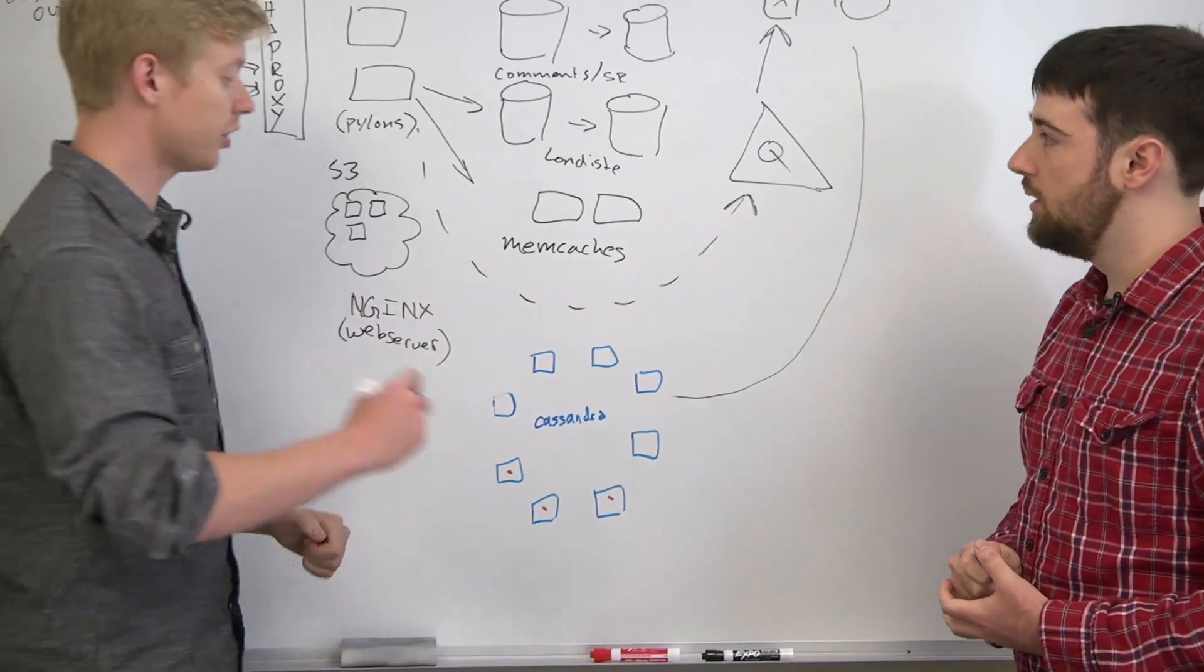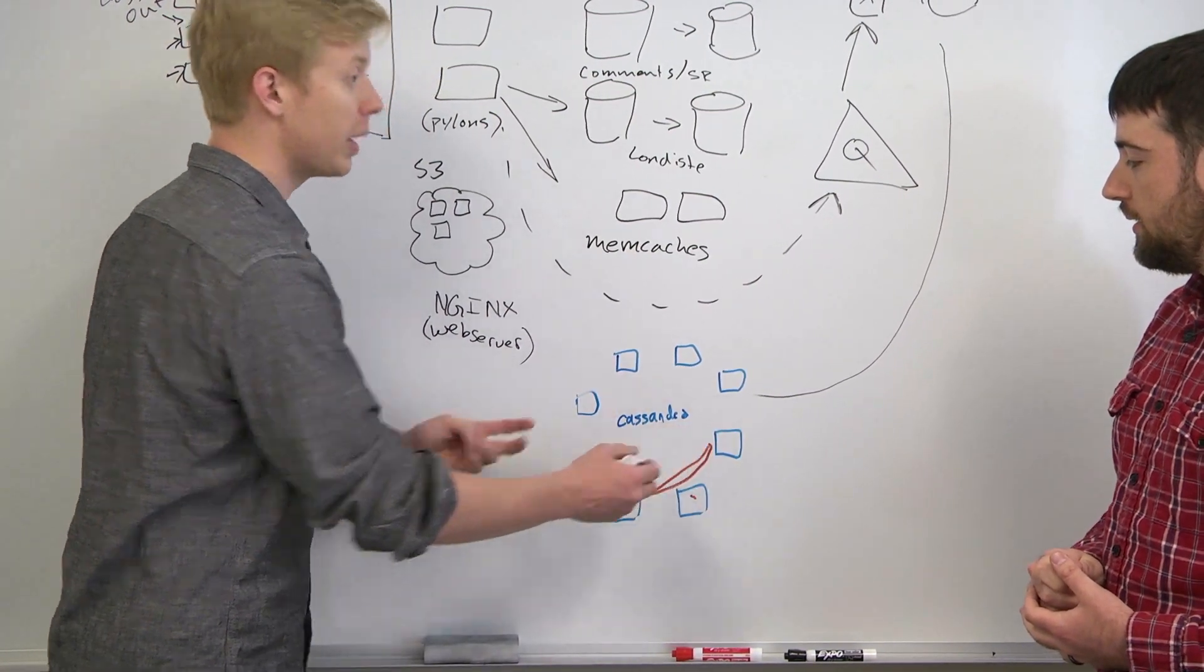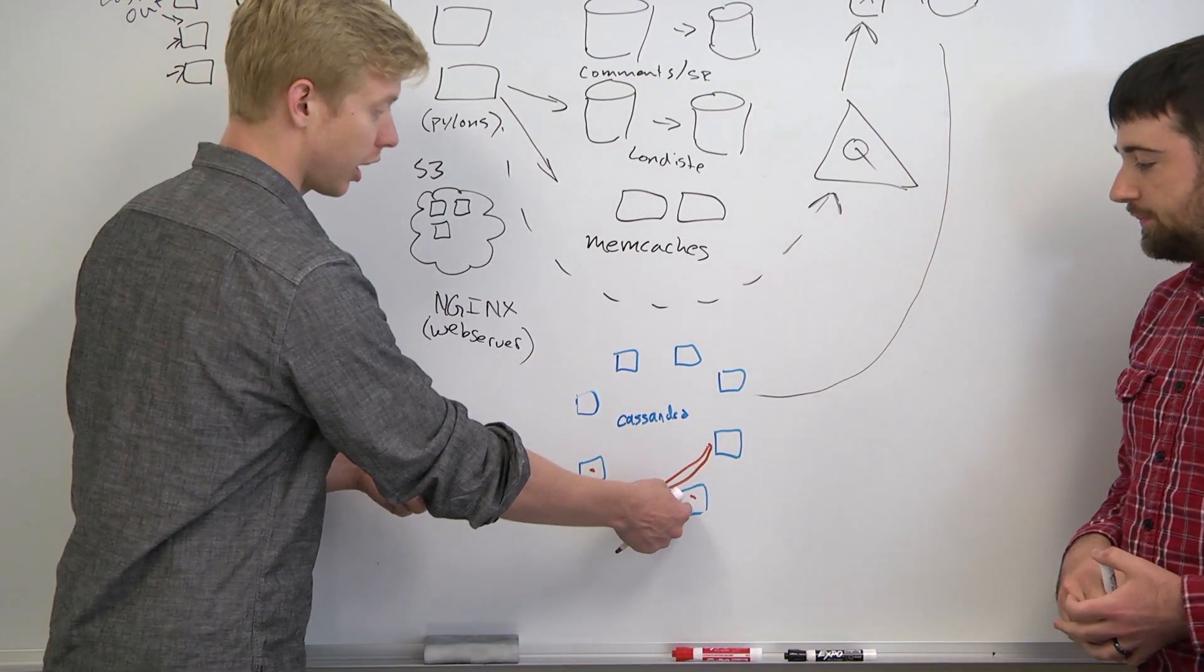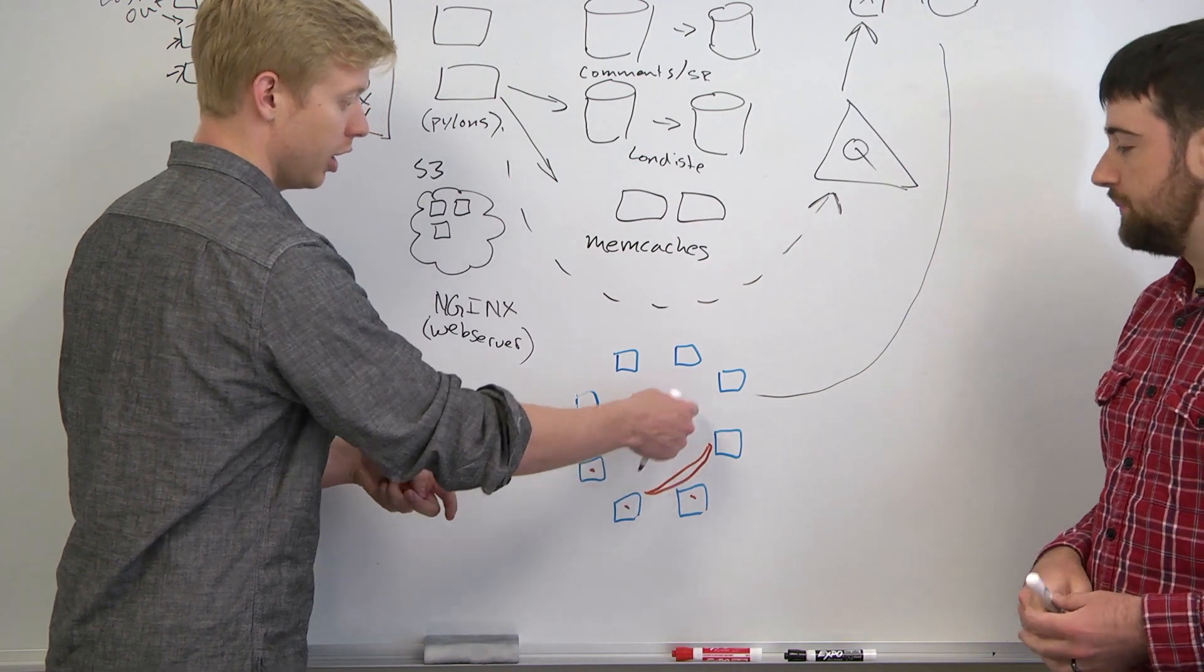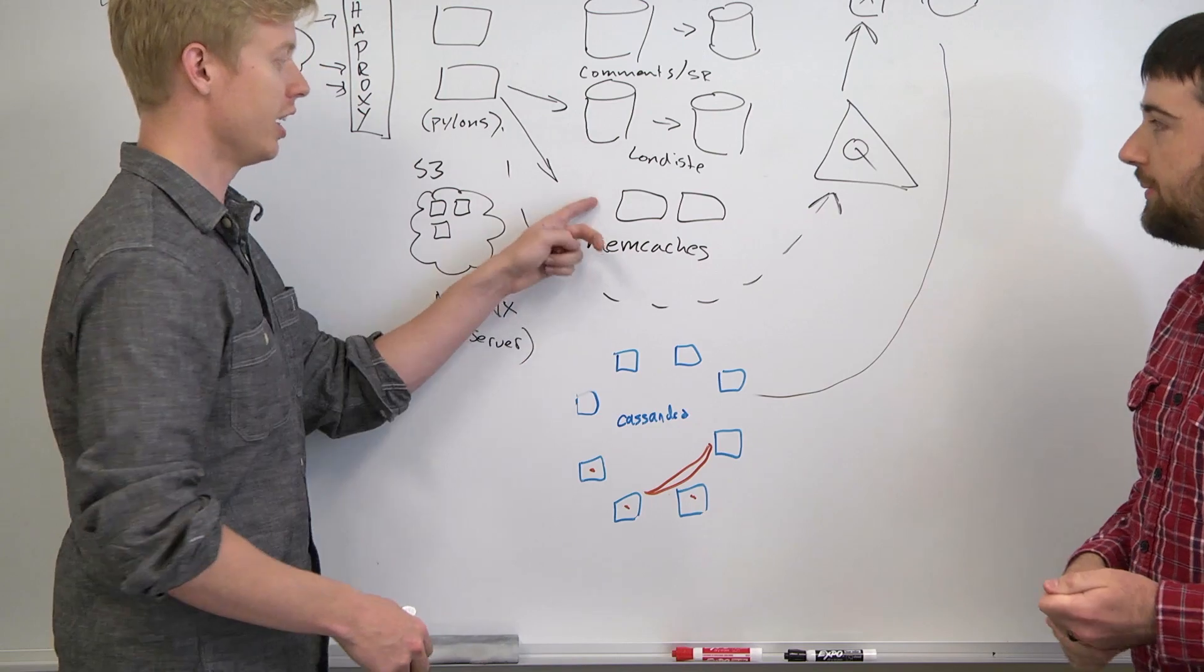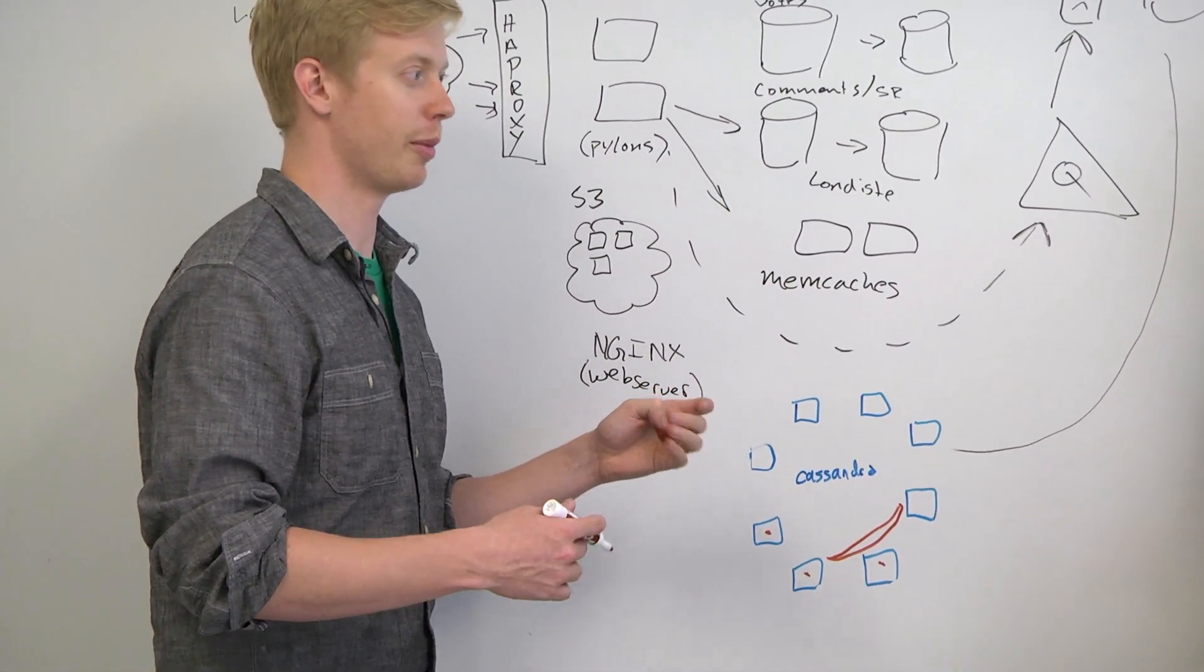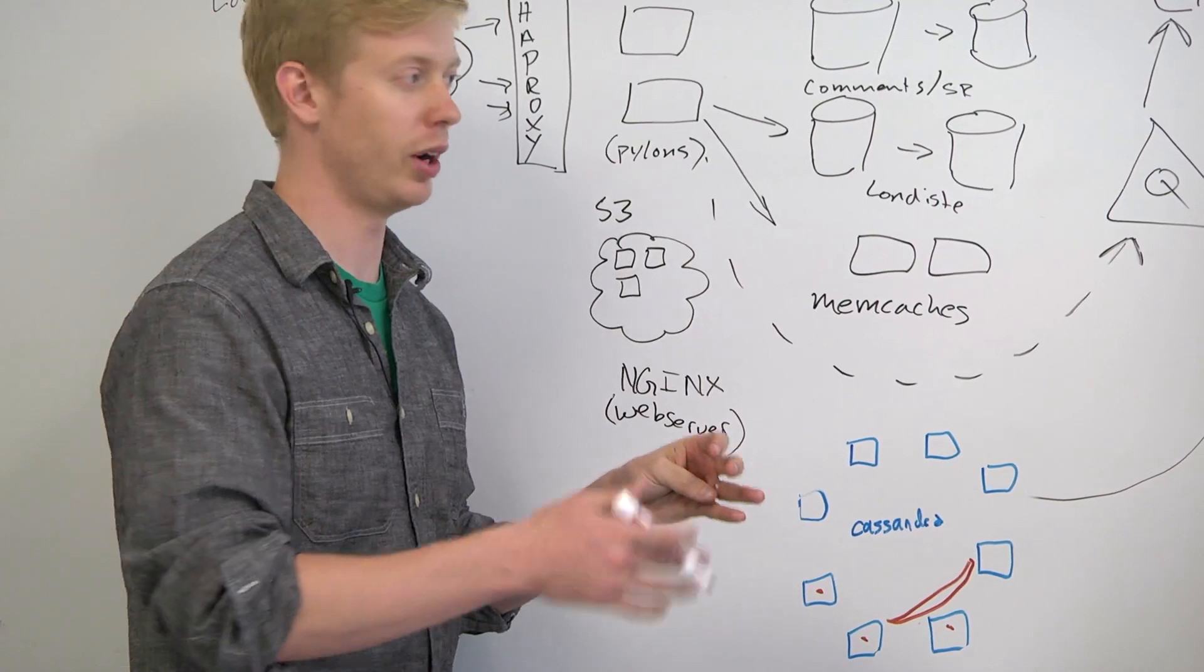If you're using consistent hashing, a key might hash to this space on the circle. If you lose this guy, the key still goes in that space, but all of the keys over here stay in the same spot and are unaffected. If you have modulo hashing, remember we talked about modulo in Unit 6 as a really naive way to distribute keys.